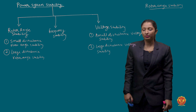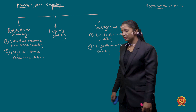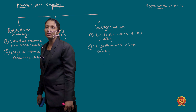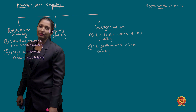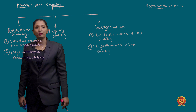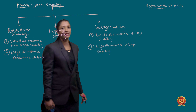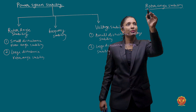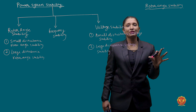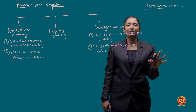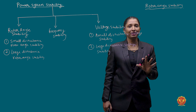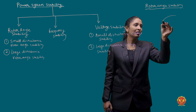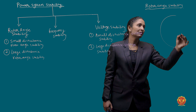We use a synchronous machine in this system. It can be operated as a motor or as a generator. When the synchronous machine is connected to the system, it is connected in synchronization. So we are drawing a synchronous machine here.